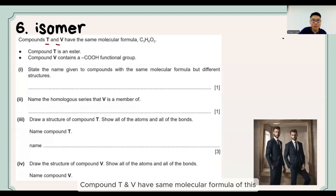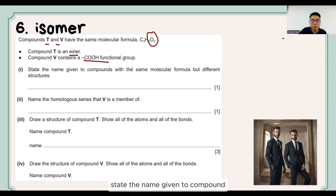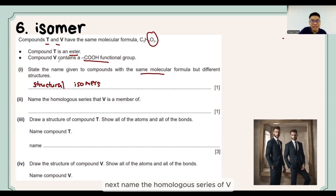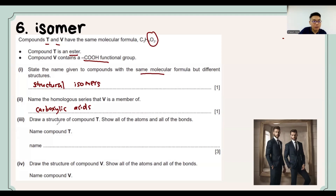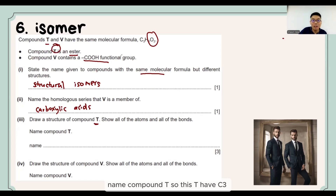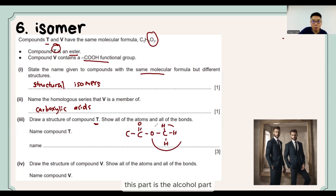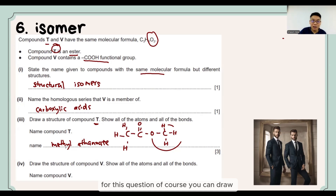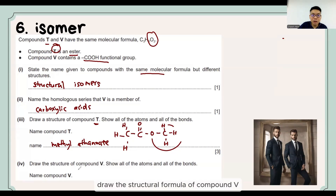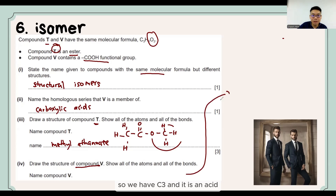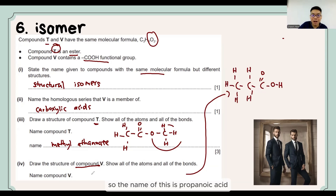One more question: compounds T and V have the same molecular formula containing 2 oxygens. We already know one is an ester and one is a carboxylic acid. The term for compounds with the same molecular formula but different structures is structural isomer. V has a COOH group, so it belongs to the carboxylic acid homologous series. Compound T has C3 and is an ester — it is methyl ethanoate (or ethyl methanoate, both accepted). Compound V is C3 with a COOH, making it propanoic acid.